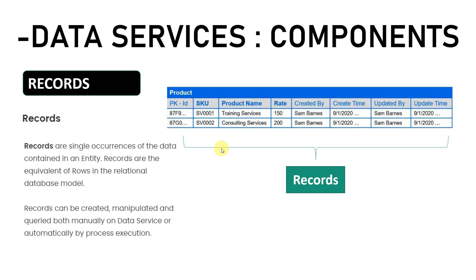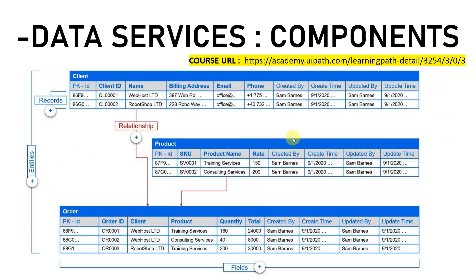Finally, records are the single occurrence of data contained in an entity, equivalent to a row in an RDBMS table. For example, 8f9, SV001, SV002 are sets of records. There is a dedicated data services course in the UiPath Academy — the URL will be in the description. From that course: three entities are defined — client, product, and order. The client name has a relationship with the order entity. PKID, order ID, client, product, quantity are all fields, and CL001 with its full row is a record.